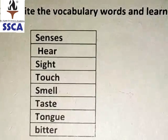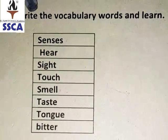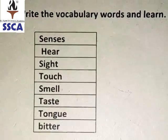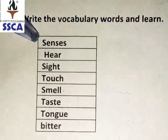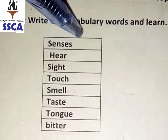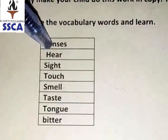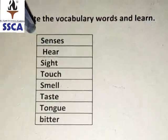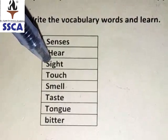Write the vocabulary words and learn them also. The first one is Senses — S-E-N-S-E-S — Senses. The second is Hear — H-E-A-R — Hear. The third is Sight — S-I-G-H-T — Sight.